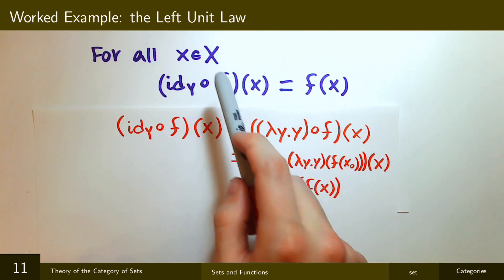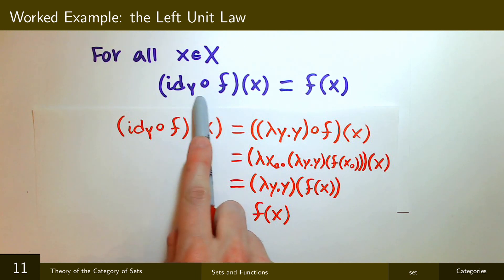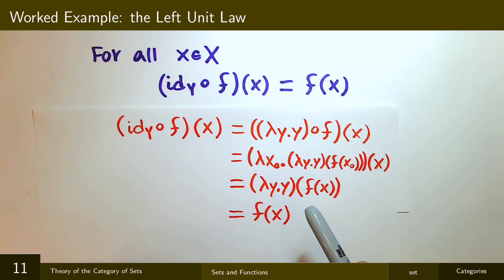And so I've shown that for arbitrary x, the left-hand side, identity of Y composed f applied to x is the same thing as f applied to x. And so by function extensionality, identity of Y composed with f is the same thing as f itself. And so I'm done.